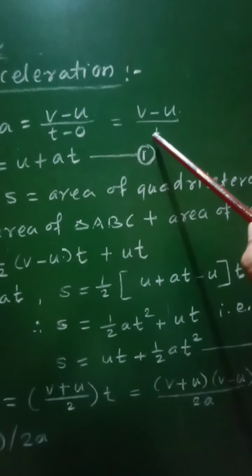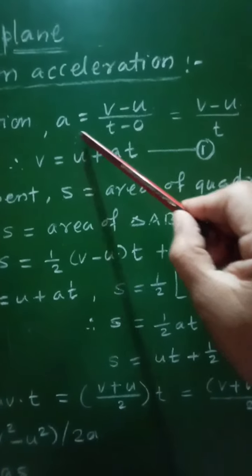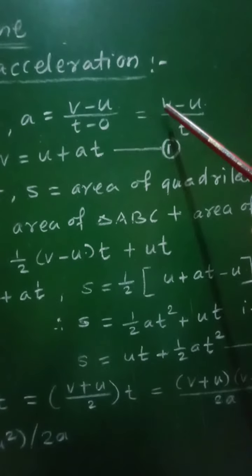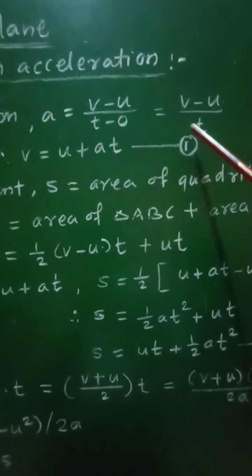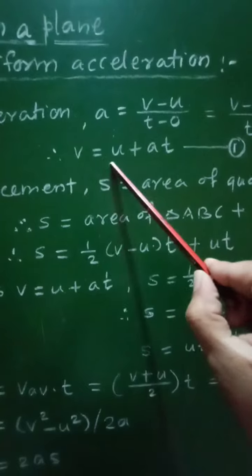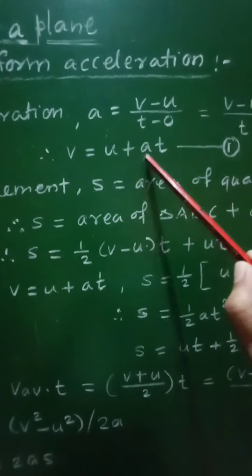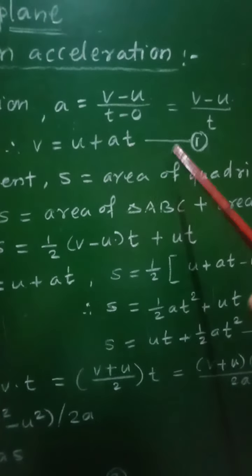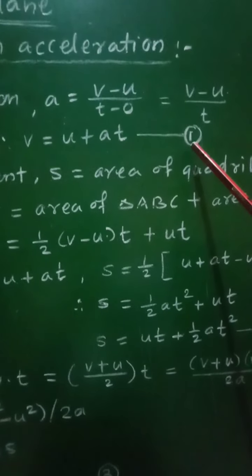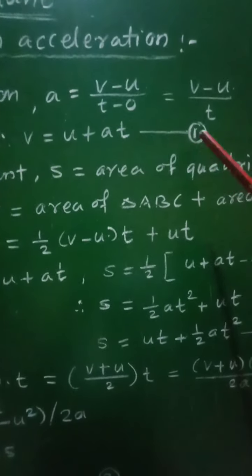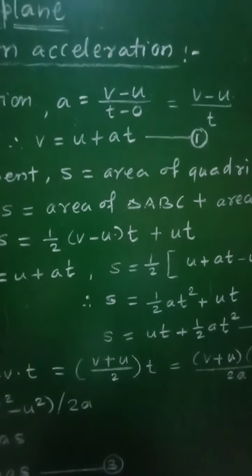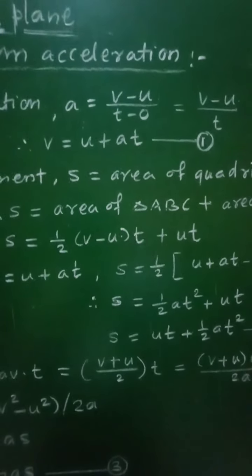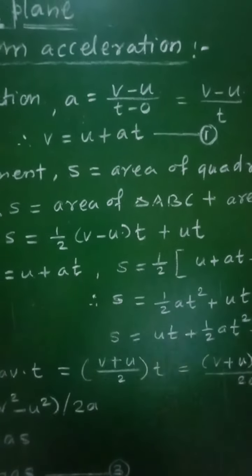Now, if we shift t towards a, it becomes at, and therefore we get v minus u = at, or v = u + at — equation number 1. This equation represents the first equation of motion, that is the first kinematical equation.